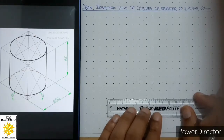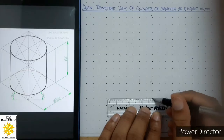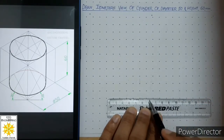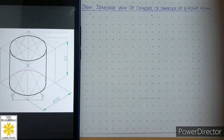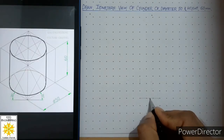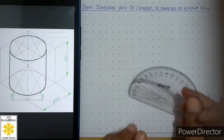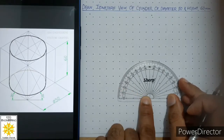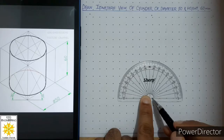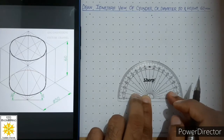The very first step is that we should draw a small horizontal line of around 20 or 30 millimeters. Here I have drawn a small horizontal line of 30 millimeters and kept it thin. Then after that we will mark a point on this line and put our protractor at that point to draw two lines at 30 degrees on both sides — we call those lines the isometric axes.